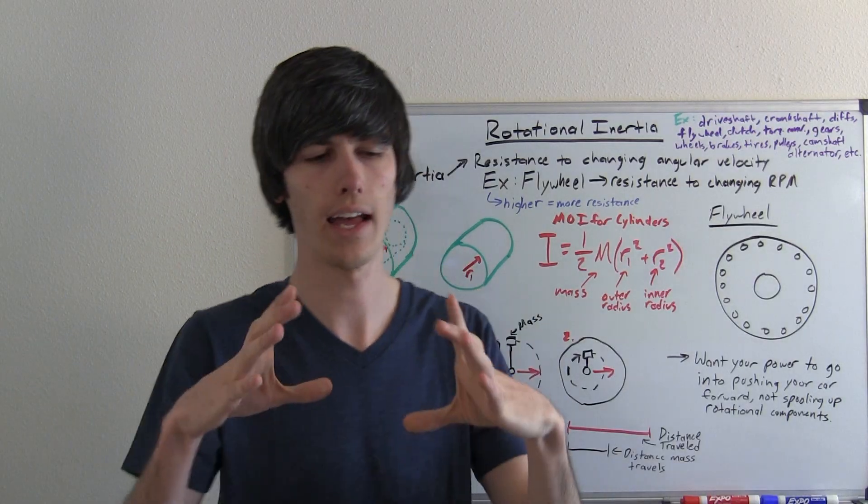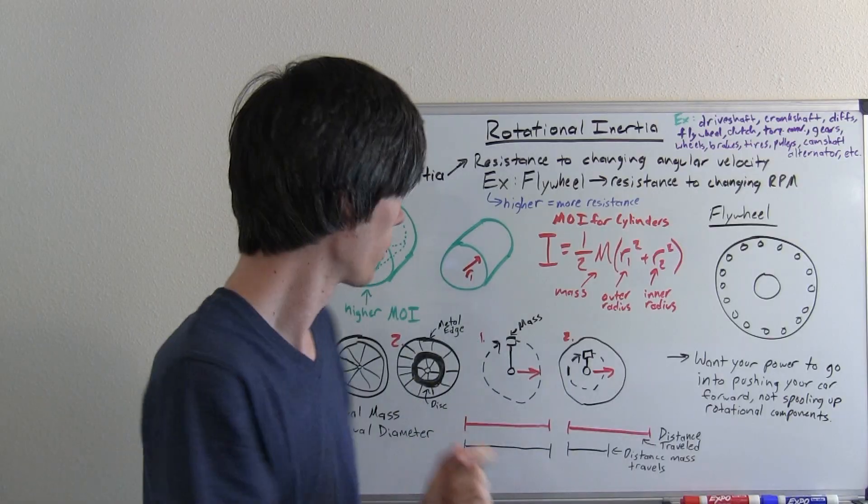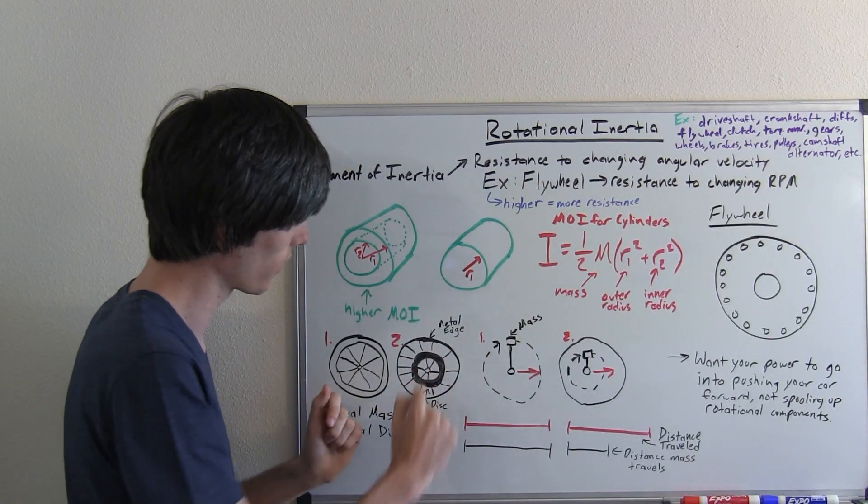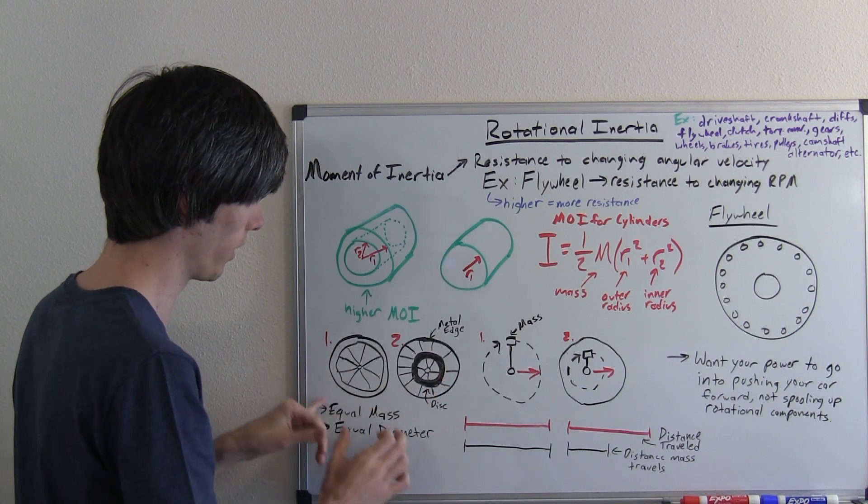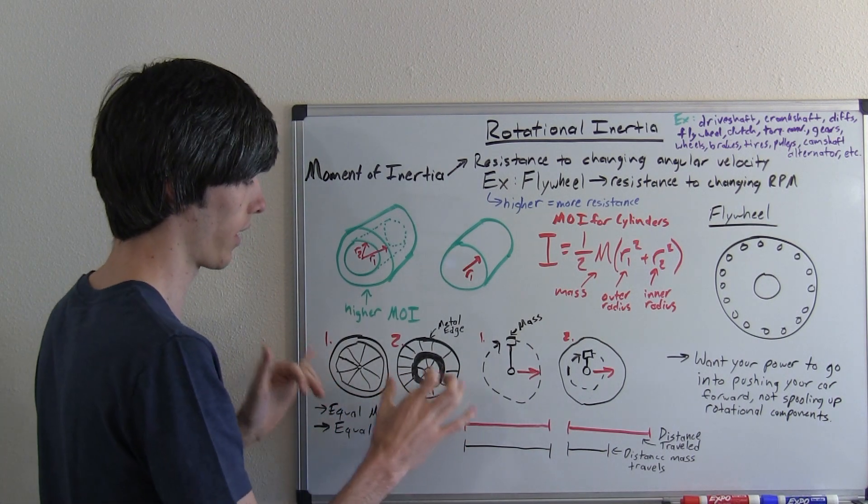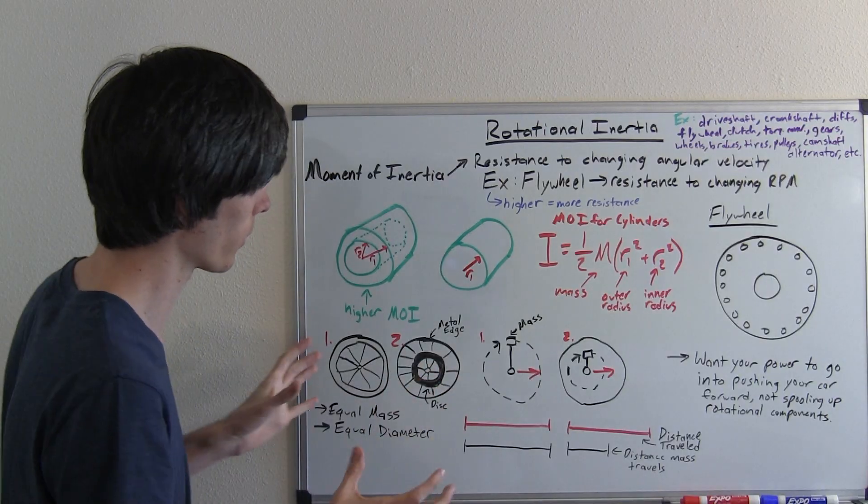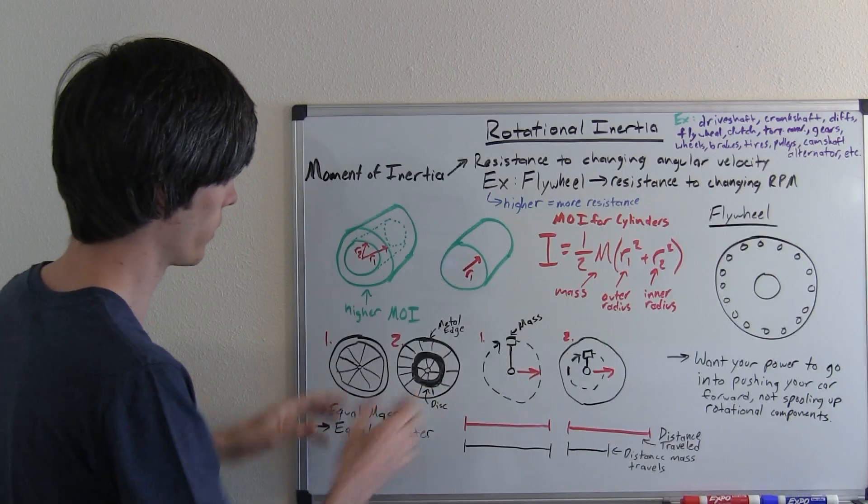In the center of that you've got a disc and that's where all the mass is. As I've drawn here, you've got that disc in the center. The thing to note about both of these is they're both going to have the exact same mass and they're both going to have the exact same diameter. The only difference between them is going to be their moment of inertia.